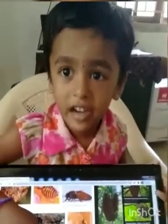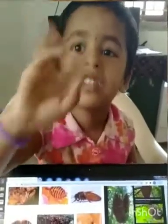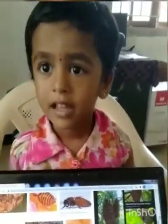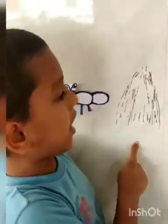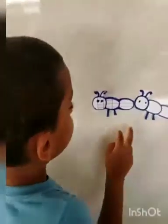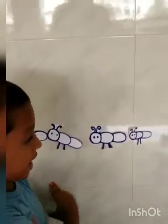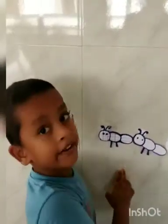It feeds on the nectar of flowers. Honey bee produces honey, good for health. I like honey. This is an ant, it lives in ant hills, it goes line by line and it sees everything and it is active.